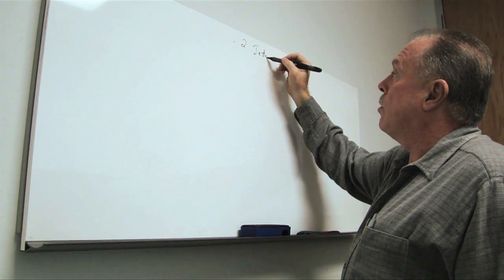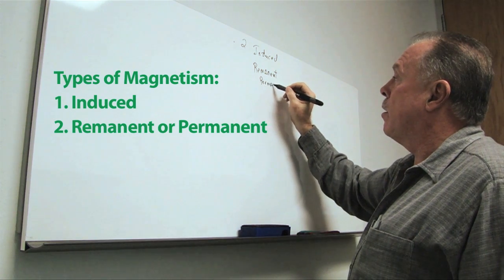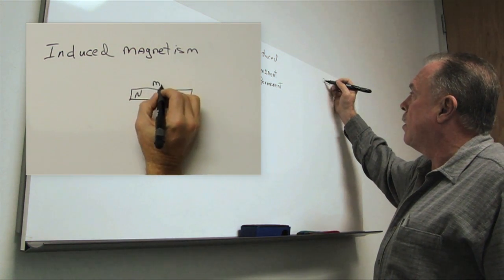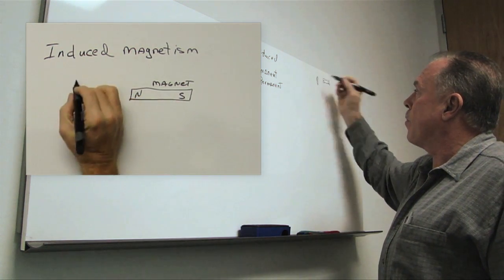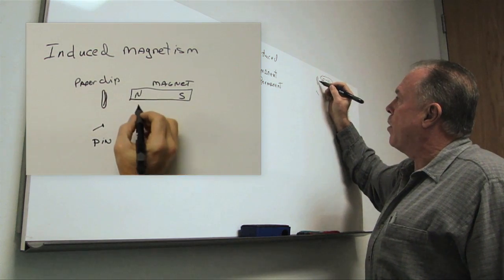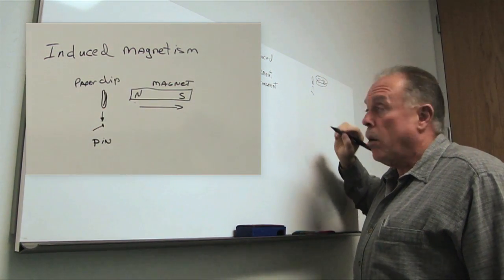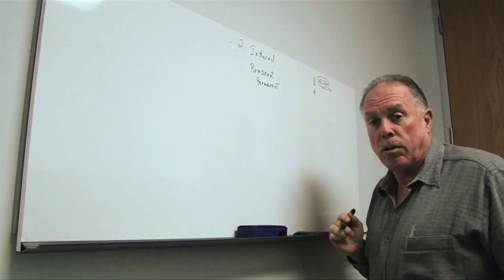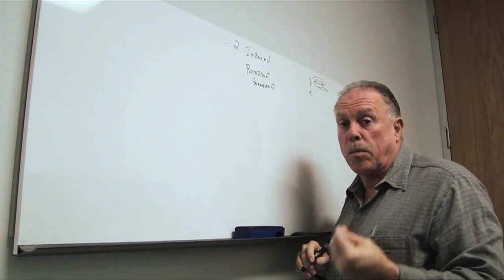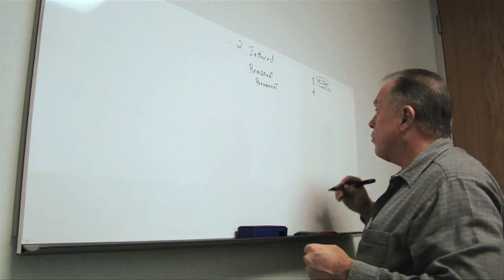One is called induced and the other is called remnant or permanent. Induced magnetics means that we have a magnet. This is something we've all done in grade school. We have a paper clip and we have a pin. If we hold the magnet close to the paper clip, we can induce a magnetic field in it and the pin will attach itself to the paper clip. When we remove the magnet, the pin will fall down. So we are inducing a magnetic field in a material, the paper clip, which has a property called susceptibility. We use an estimate of an object's susceptibility to determine how far away we can see it. So this is induced.